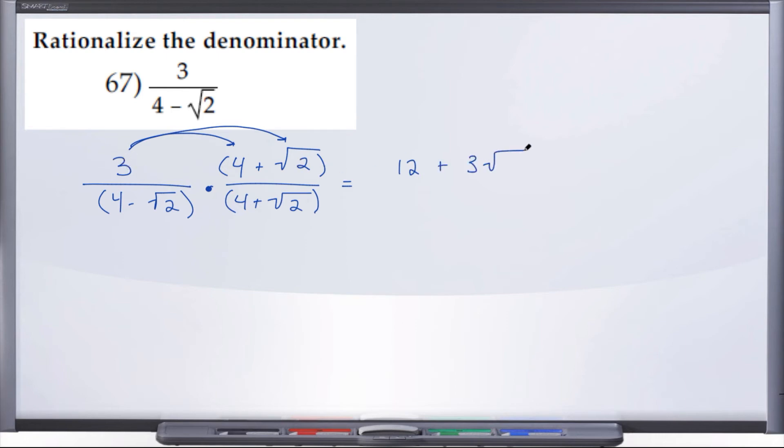And now over... and you might recall with conjugates, we don't have to FOIL this whole thing out. We can just do our first to our first and our last to our last. So 4 times 4 is 16, negative radical 2 times positive radical 2 is minus radical 4.